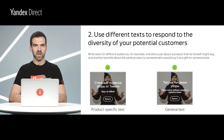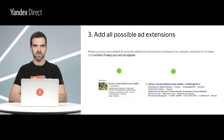Once you have launched your campaign with these varying segments, you should also assess each segment's performance. In this slide, we can see two ads based on the same creative. On the left, the ad text aims to attract users to the specific brand, whereas the text on the right aims at a broader audience. Make sure you have added all possible additional ad extensions — display link, callouts, site links — to increase the number of ways your ad can appear.